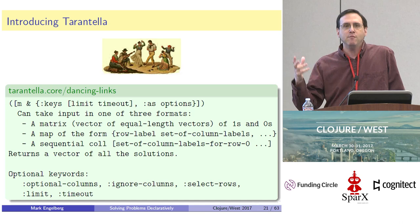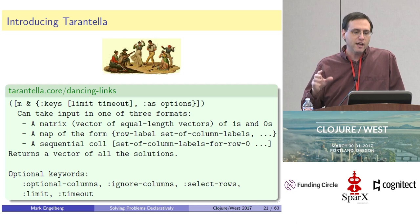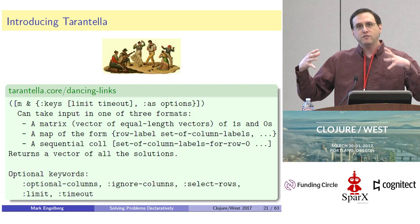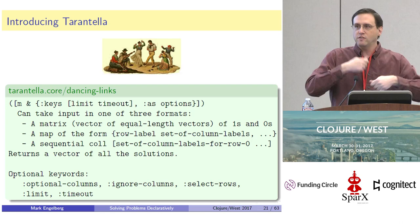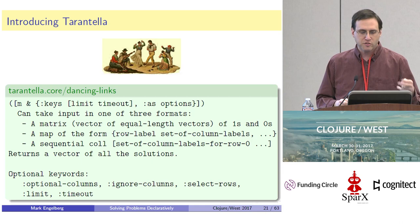So I took the Dancing Links algorithm and implemented the core data structure, pointer manipulation, and all that stuff at the Java level, and then I created an open source library called Tarantella. Tarantella exposes a single function in its API called dancing-links. It can take a matrix in a few different formats, handles the details of taking that matrix and turning it into the relevant data structure for the underlying Java library, cranks through the Java Dancing Links algorithm, and then spits the result back out in a Clojure form that you can use.